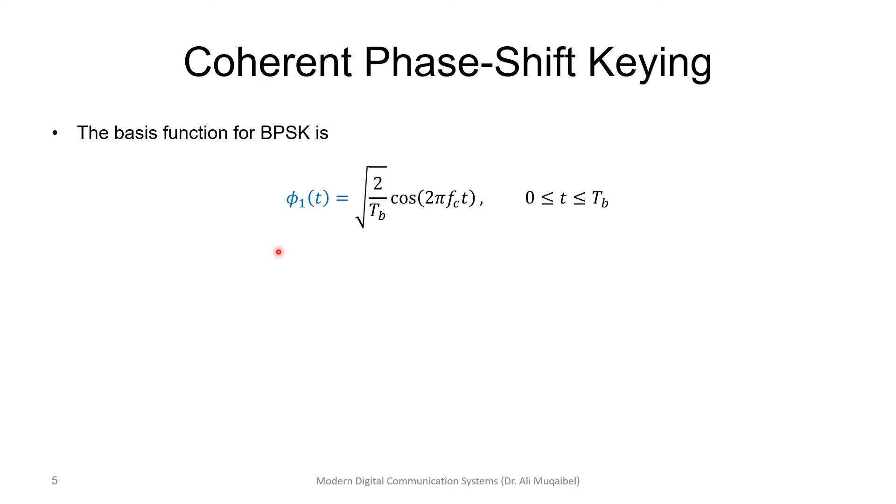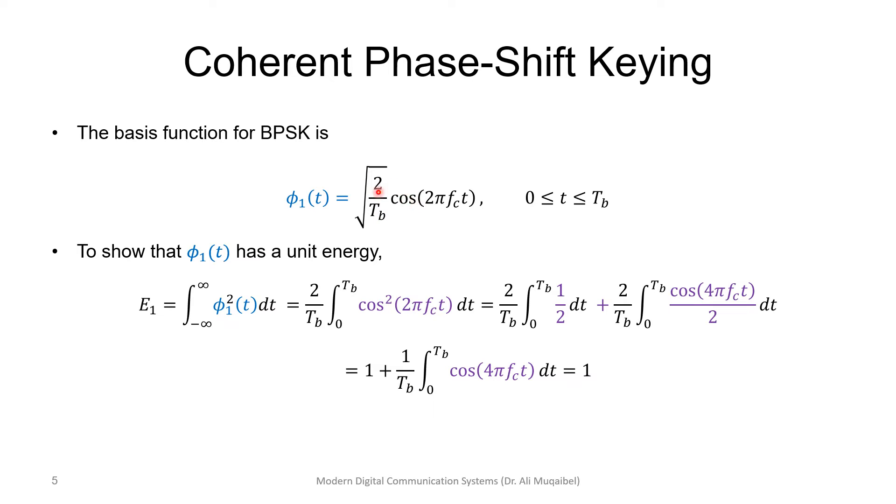The bases that we'll use will be very similar. We have only one basis, and this is, of course, normalized energy. So, if you make Eb equal to 1 in the signal, we'll get the following expression. And to make sure that this is just to confirm that this has a unit of energy of 1, you can integrate this. And, of course, it's 0 outside, so the integration limit will change from 0 to Tb.